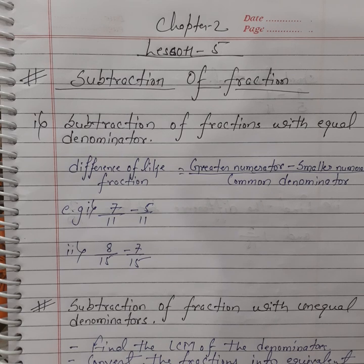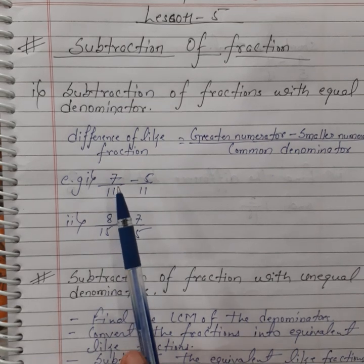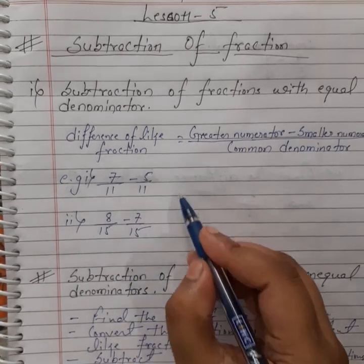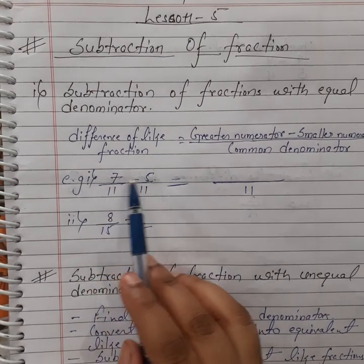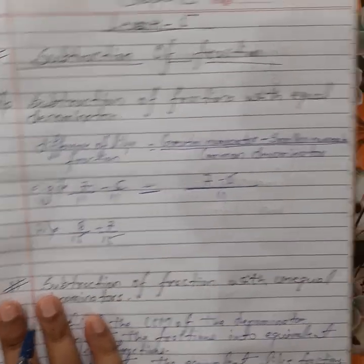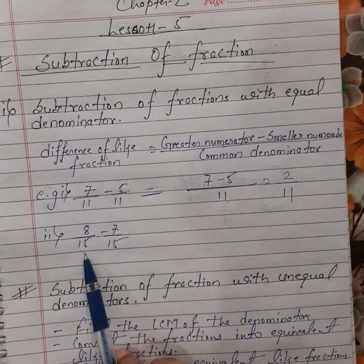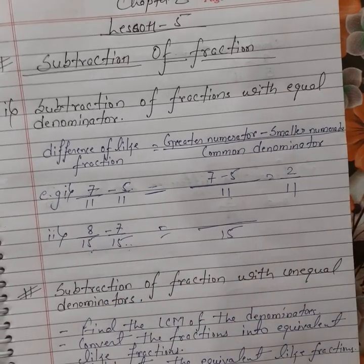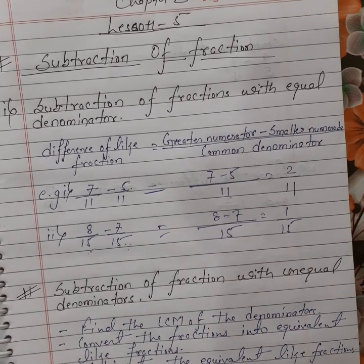We just subtract the numerators — greater numerator minus smaller numerator — and divide by the common denominator. For example: 7 by 11 minus 5 by 11. The denominators are the same, so these are like fractions. Write the common denominator 11 and subtract the numerators: 7 minus 5. We get 2 by 11. Next: 8 by 15 minus 7 by 15. The denominators are the same, so write the common denominator and subtract: 8 minus 7. We get 1 by 15. Subtraction of like fractions is very simple.